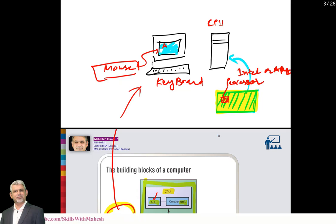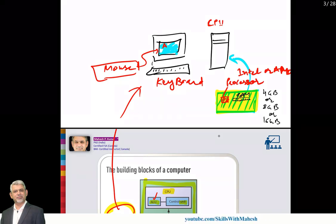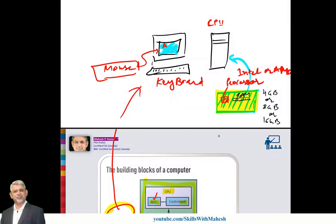Then there is memory. RAM memory is here. You always purchase computer and they say there is four gigs of RAM or eight gigs of RAM, some have 16 gigs of RAM. This RAM, there is a slot on the motherboard, random access memory. All those things are connected to each other.